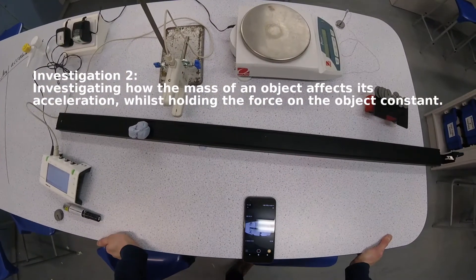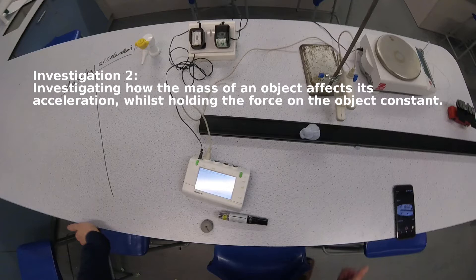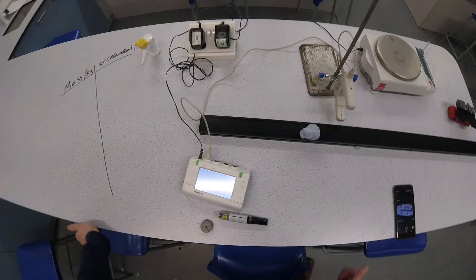In the second part of this investigation, we are going to be changing the mass of the car whilst keeping the force on the car exactly the same. We're going to be seeing how the mass of the car is going to affect the acceleration. You can see the table on the left again. This time we've got mass, and that's what we're going to change - that's our independent variable this time - the mass of the red car that is being accelerated.